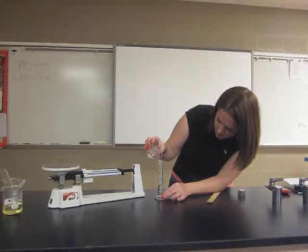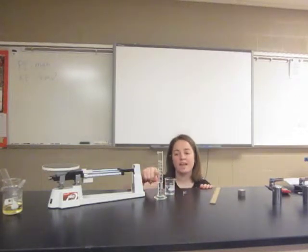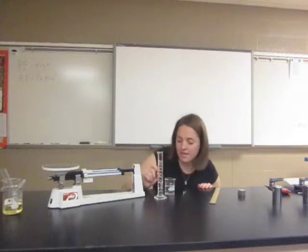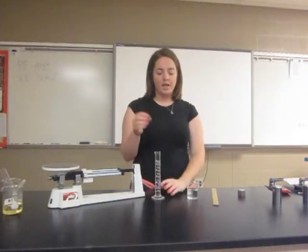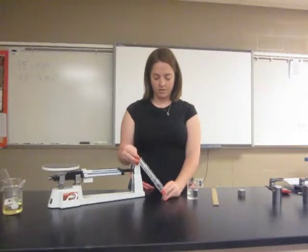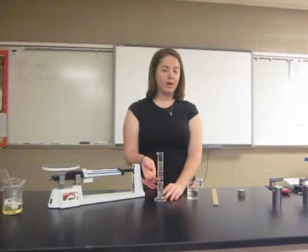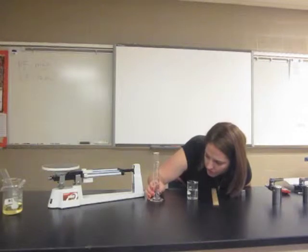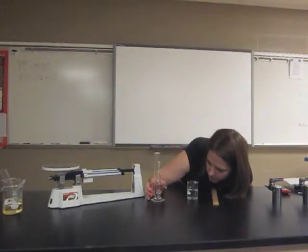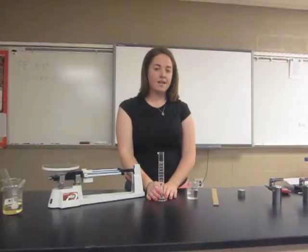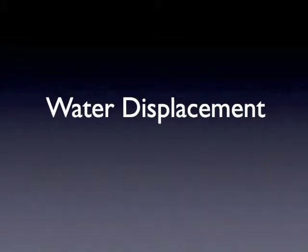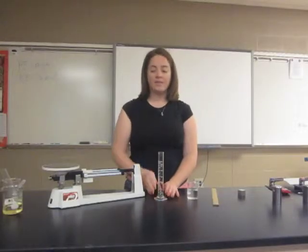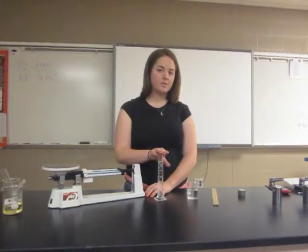Stop at 20 milliliters — the bottom of the meniscus should be even with the 20 milliliter line. Now drop the marble in and the water level will rise. The amount the water rises is the volume the marble displaces. My new water level is 23 milliliters, so I subtract 23 minus 20 and get 3 milliliters — this is the volume of my marble. Fill this in on your paper, then divide the mass by the volume to get the density of the marble.